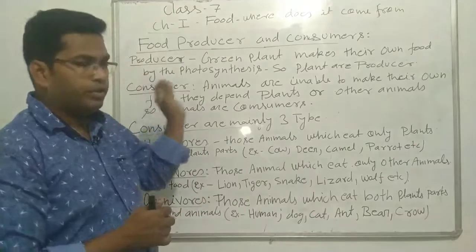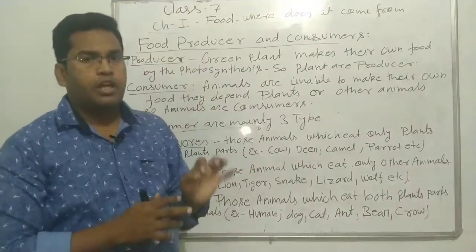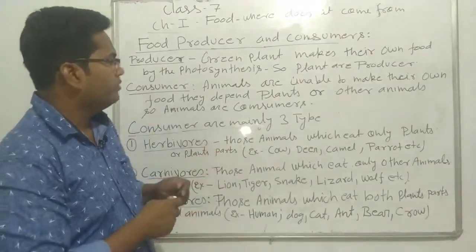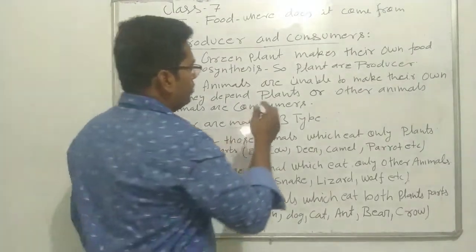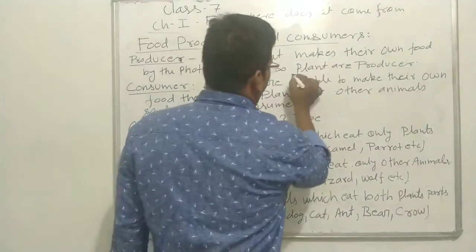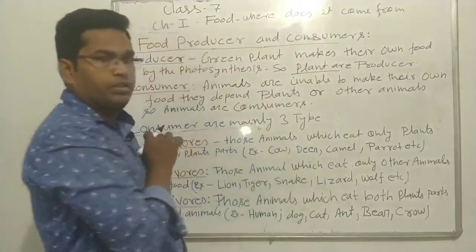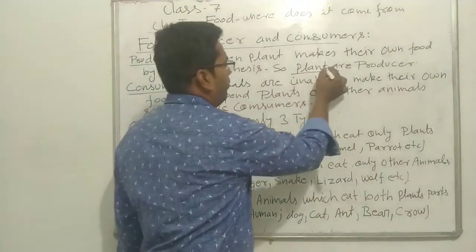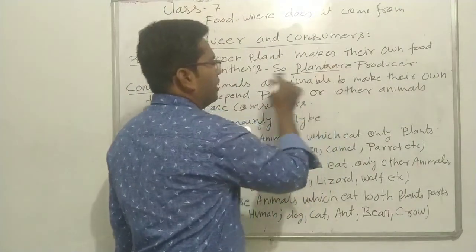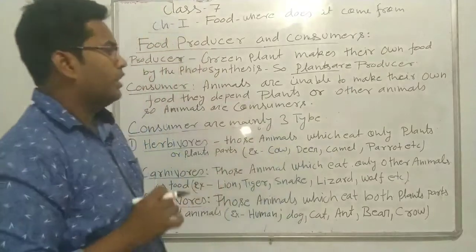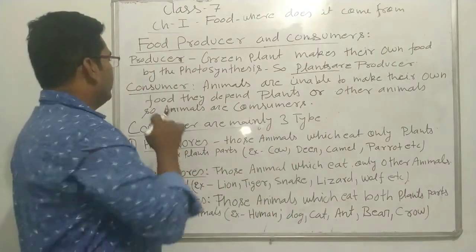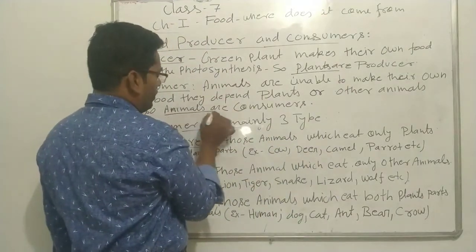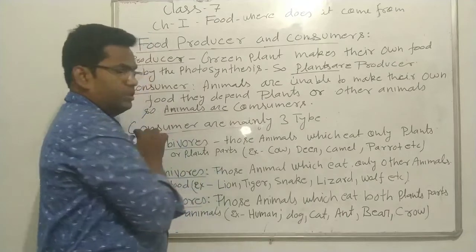The green plants are called producers, and all the animals and human beings are consumers.